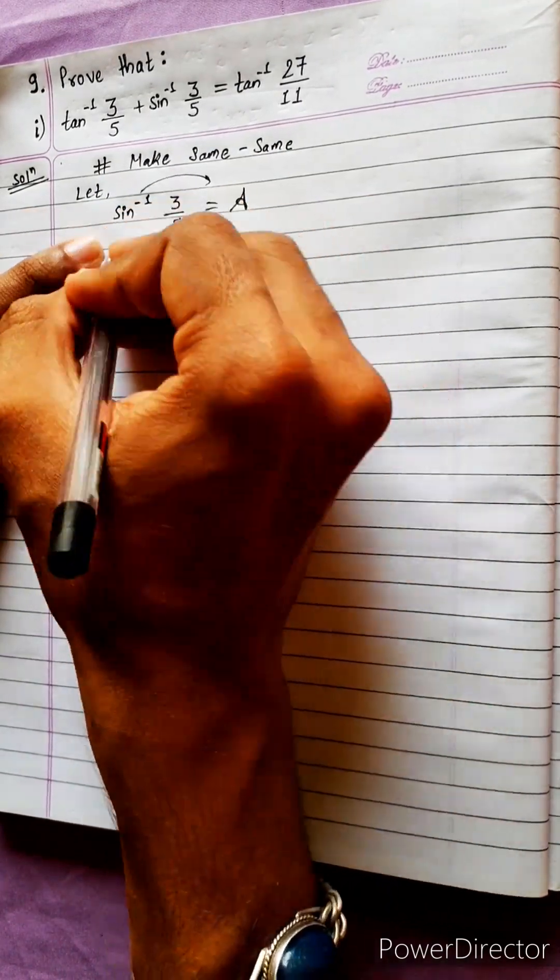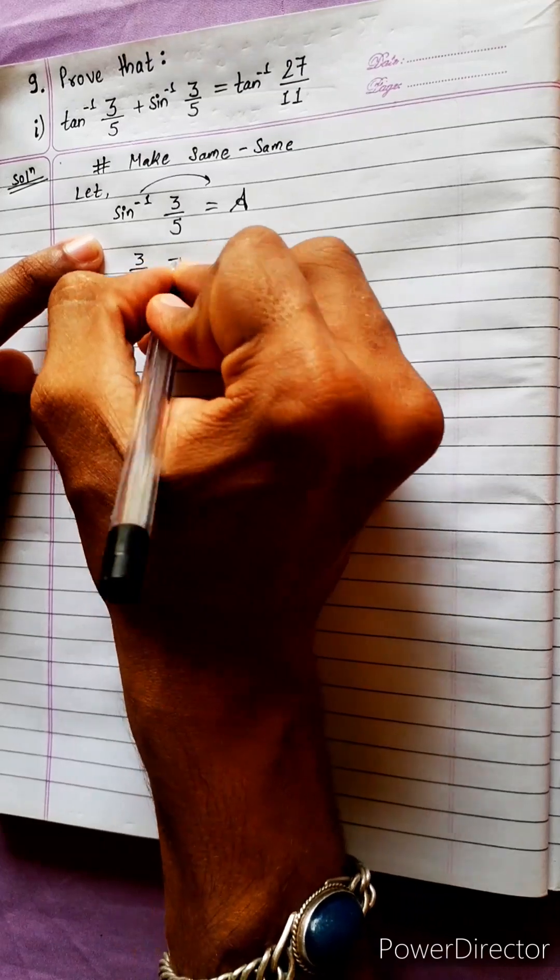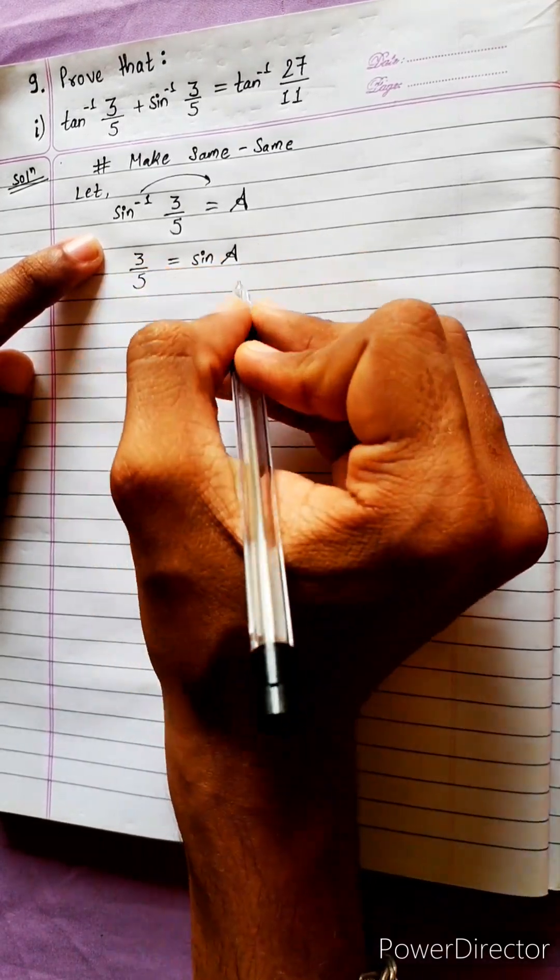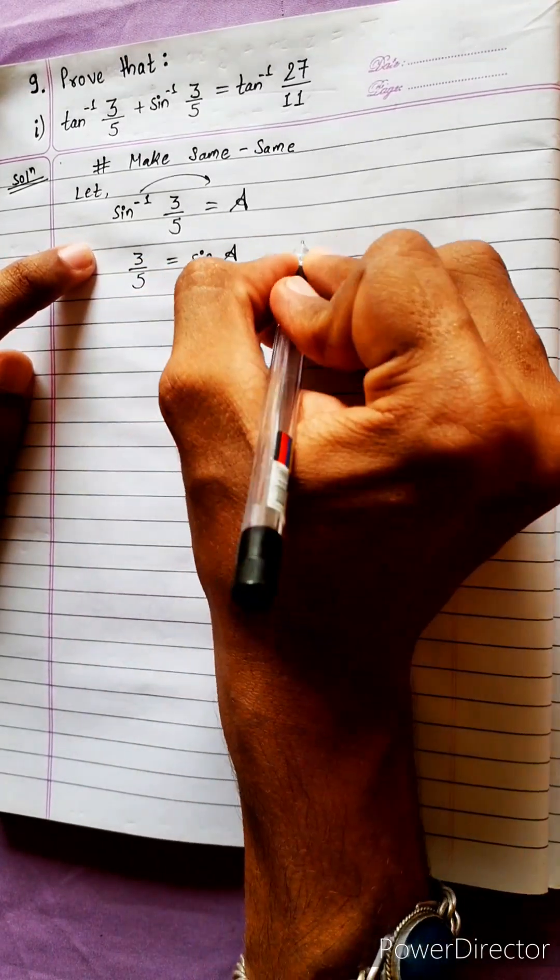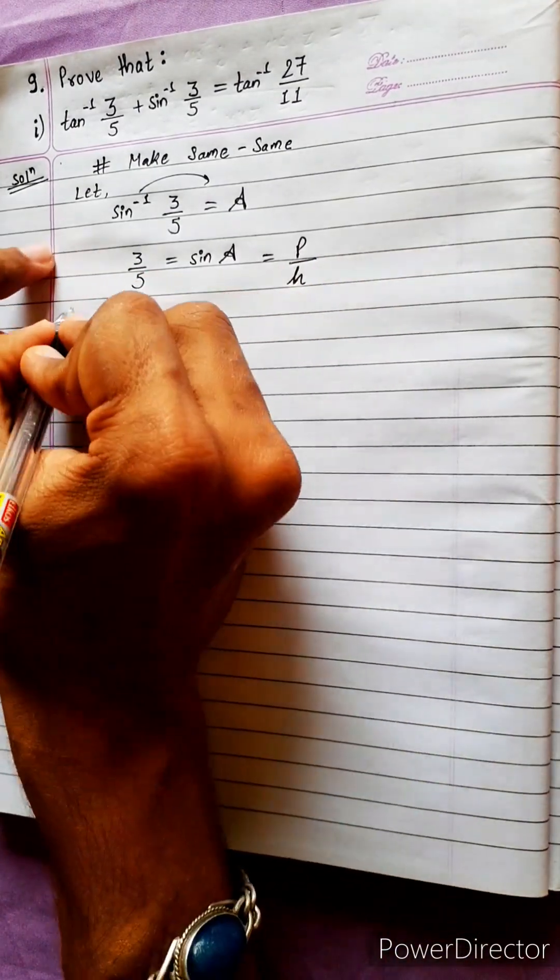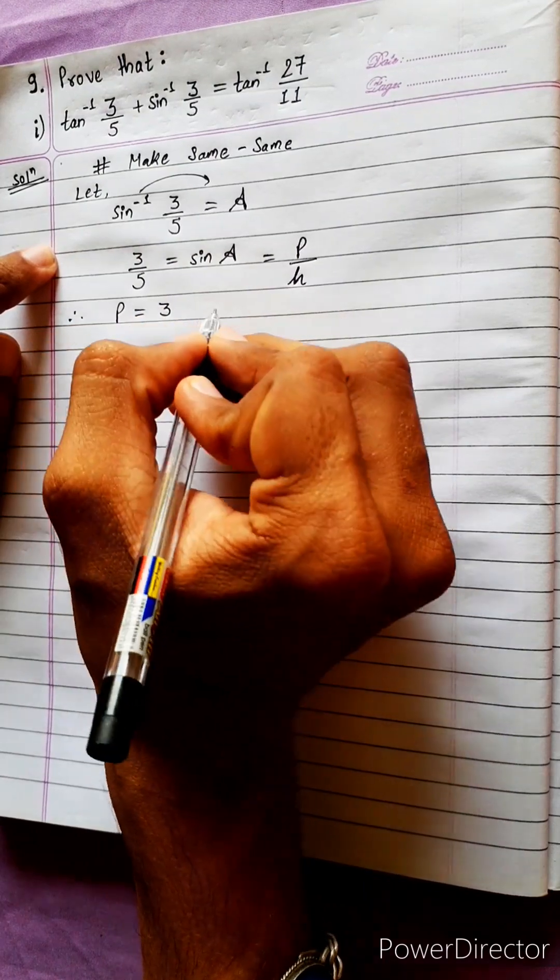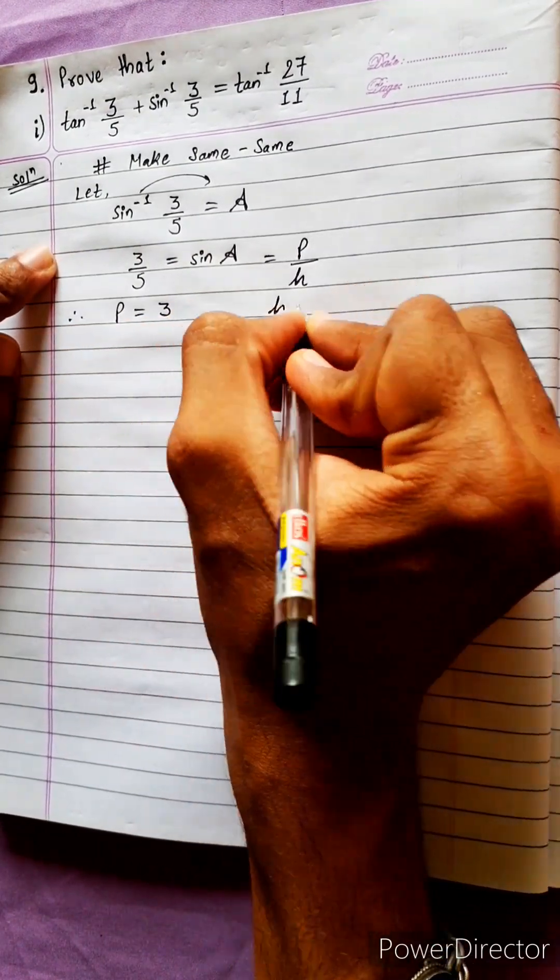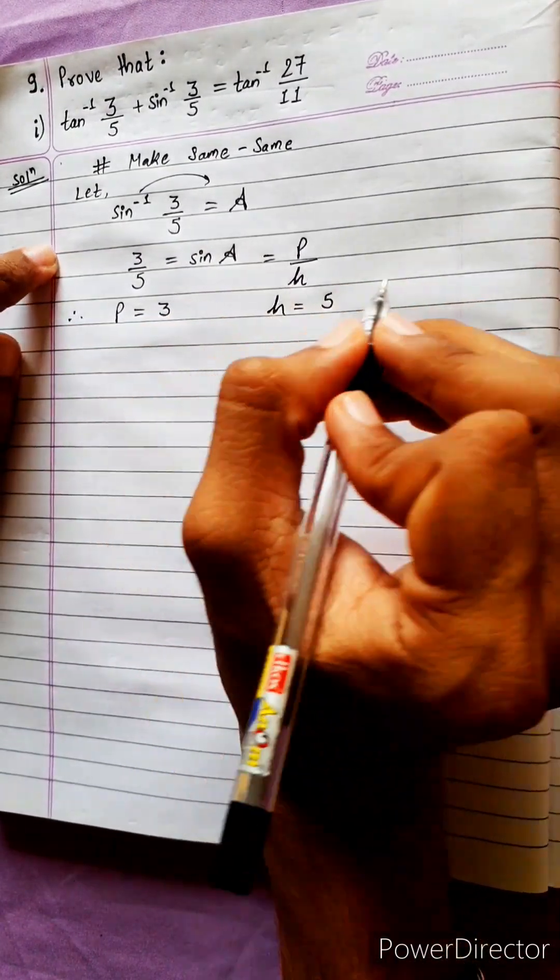So sine a is transferred to 3 by 5, equals sine a. Now sine a equals p by h, perpendicular by hypotenuse, 3 by 5. Therefore perpendicular equals 3 into some constant, hypotenuse equals 5 into constant.